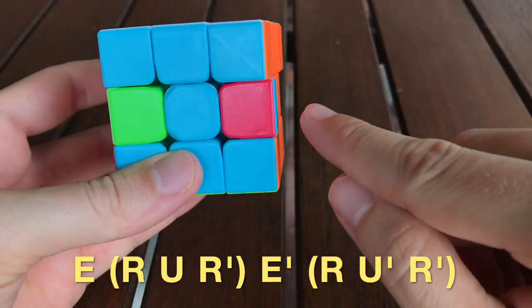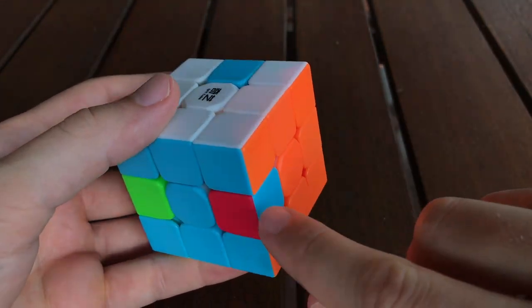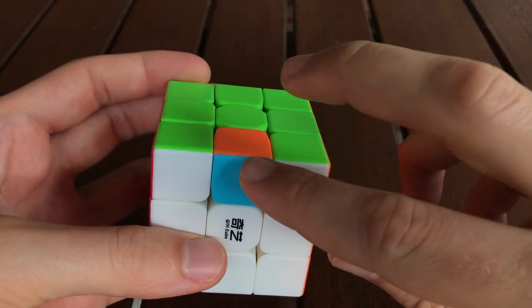Now notice that the three pieces have permuted just like before. The red and blue stickers are in the same position, but the orange and blue stickers have flipped from their previous orientation.